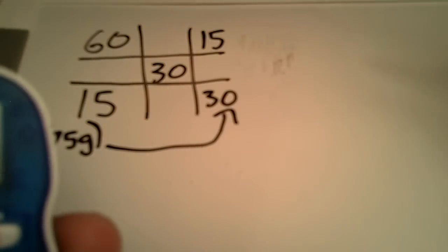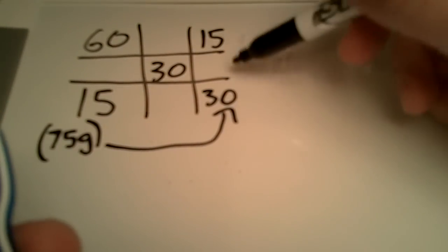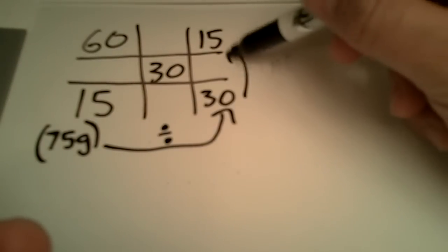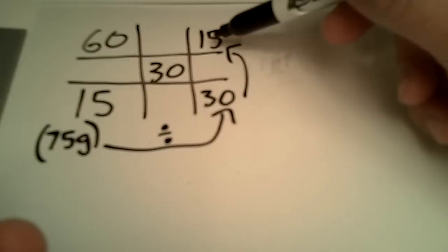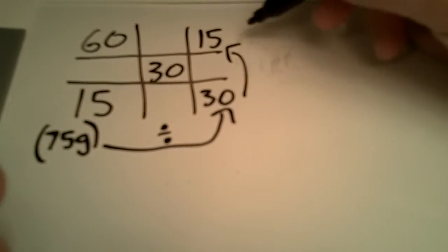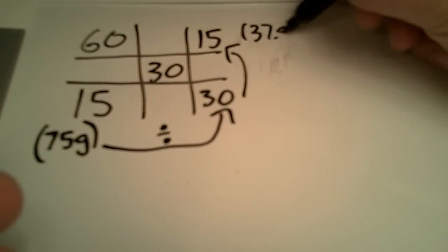So that is 75 divided by 30 equals 2.5. So we'll take that number now and multiply by the amount of parts for the other solution. So we're going to multiply by 15. So that's 37.5.